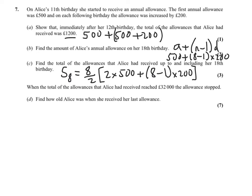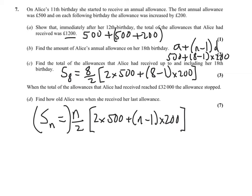Now when the total of the allowances that Alice received reaches £32,000, the allowances stopped. So we've got to find, you're doing S to the N equals N over 2. We don't know how many years that is, but we do know 2 times 500 plus N minus 1 times 200. I'm just going to make that equal to £32,000, solve that equation, and you're done.